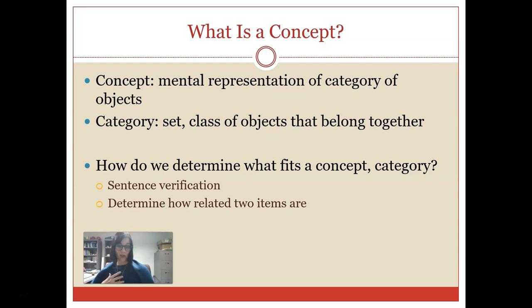When we talk about a category, we are talking about a set or a class of objects that generally will belong together for some sort of reason: animals, plants, fruits, etc. How do we determine whether or not something fits into our current working model of a concept or a category? Historically, people have tried to do this in one of two ways. First, they do something called sentence verification. I give you a sentence such as, An apple is a fruit, and you're going to obviously say yes to that. The idea here being that the more correctly that you identify it, and also the quicker that you verify the sentence, the more that that particular object belongs to that concept or category.